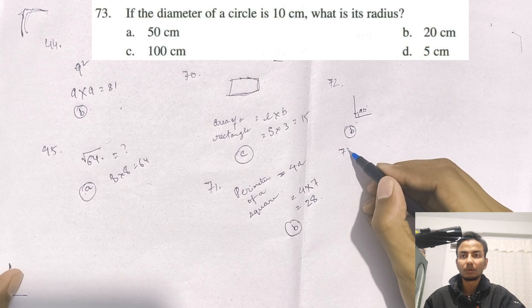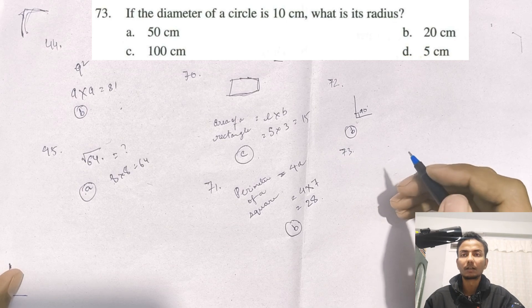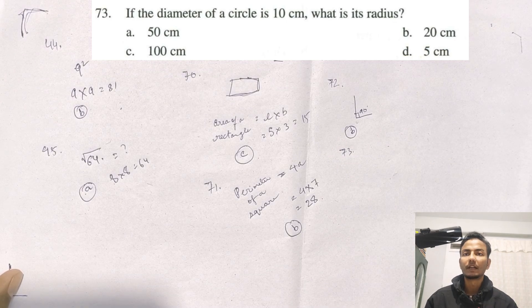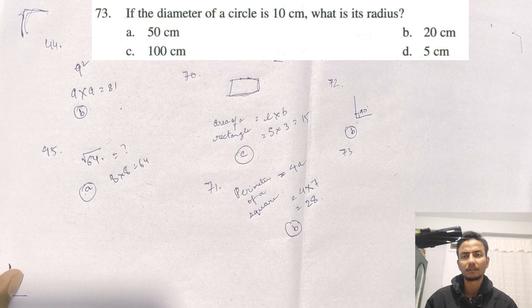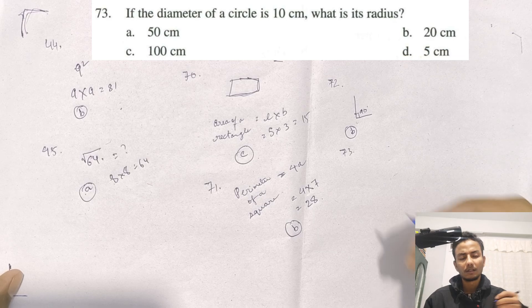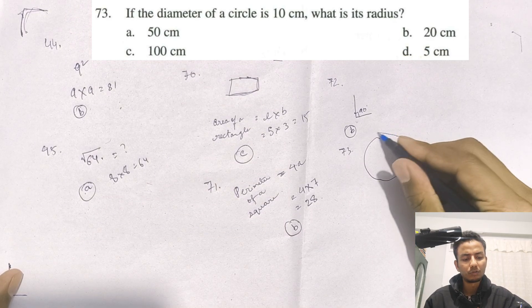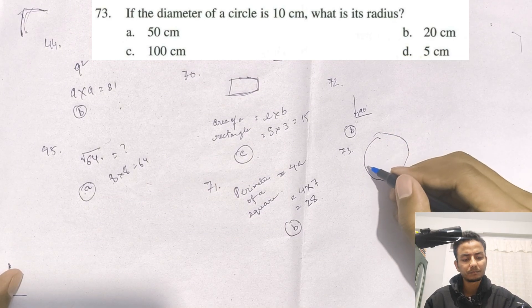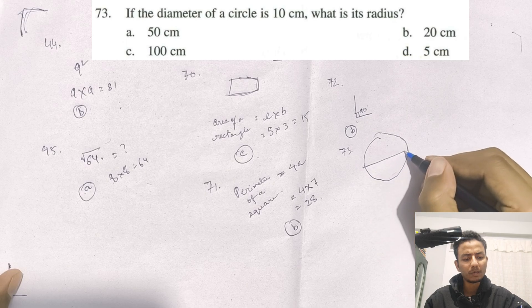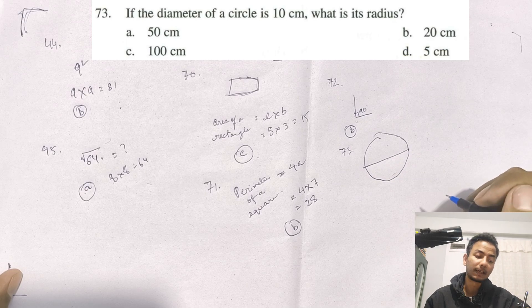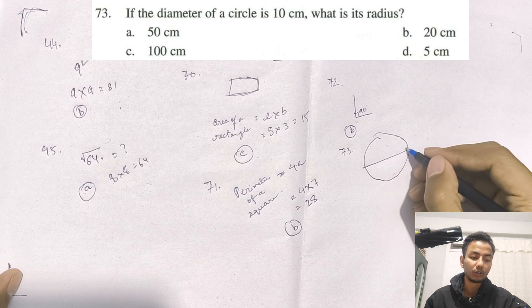Next question is 73. If the diameter of a circle is 10 cm, what is its radius? The diameter is the full width across the circle.